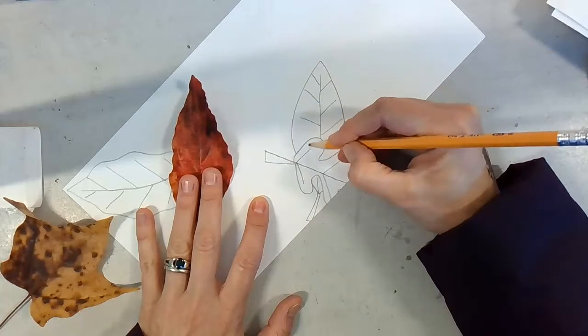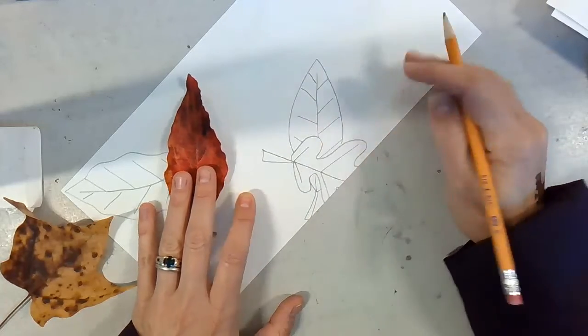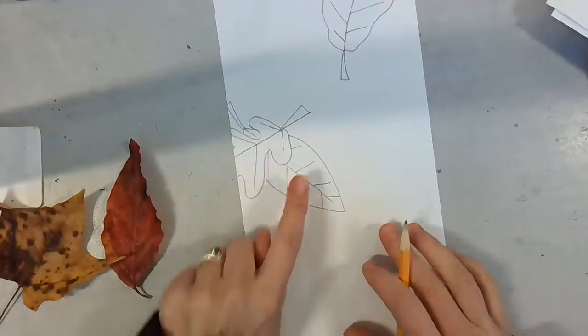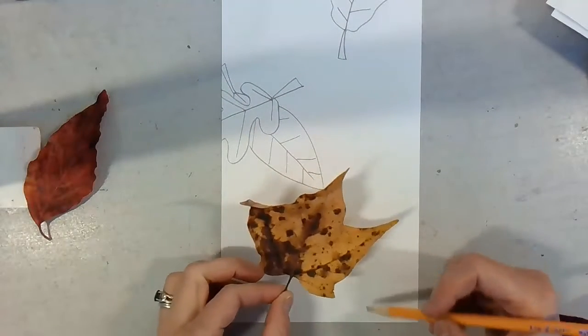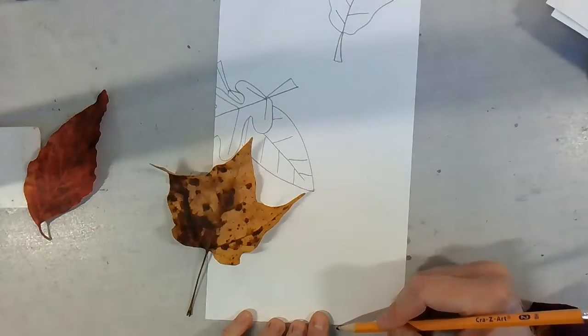Alternating veins. There we go. All right, I've got my overlapping and I've got my cropped leaf. Now I've got to work on balancing my composition, balancing my paper.